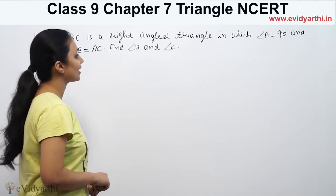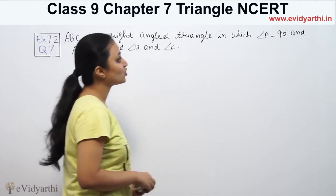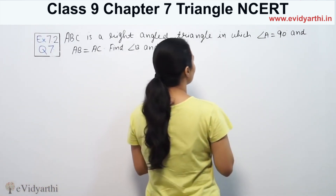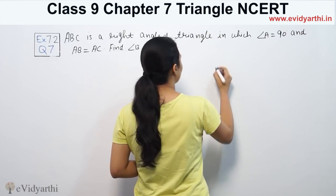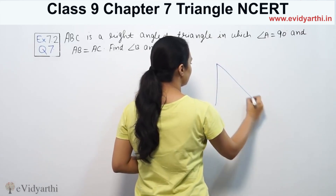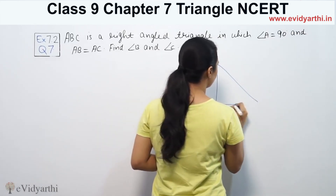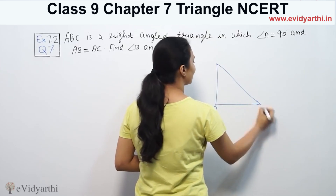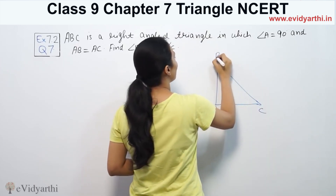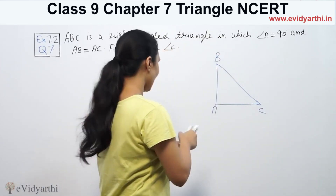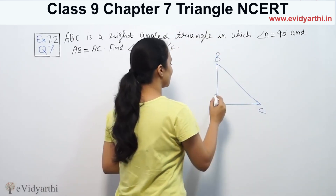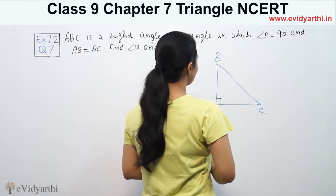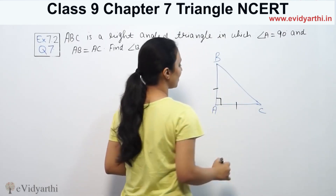The question says: ABC is a right-angled triangle in which angle A is 90 degrees, and AB is equal to AC.